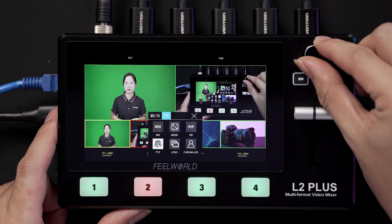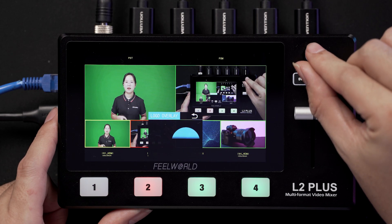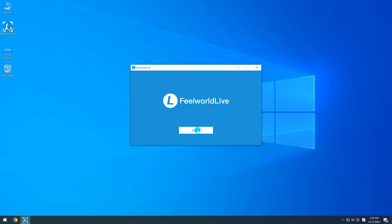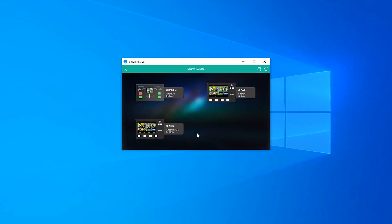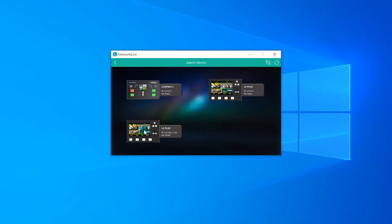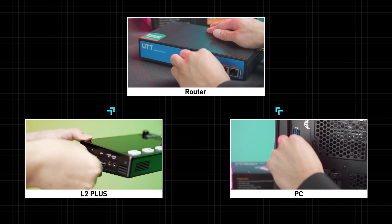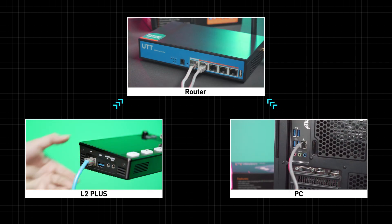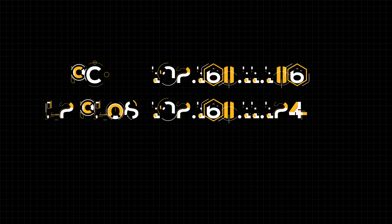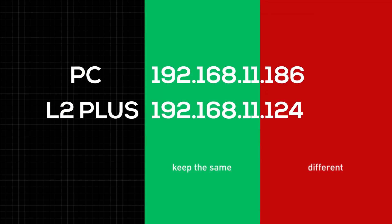Logo menu. Here we need to import the logo image into the L2 Plus using the computer. Connect L2 Plus and your computer to the same router via LAN cable. In order to realize the connection, we need to keep the first three segments of the IP address the same, so we need to modify the L2's IP address.